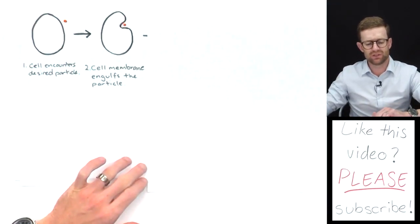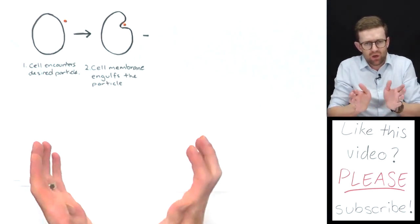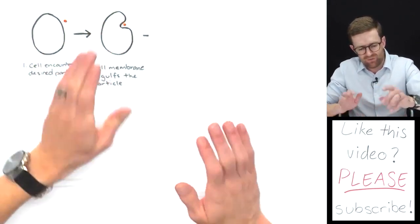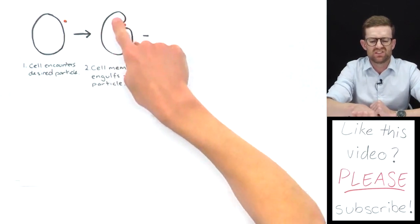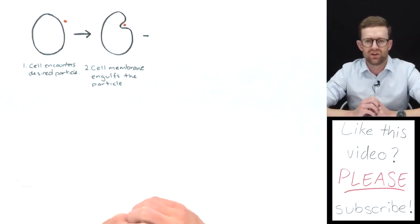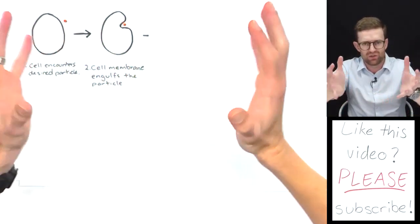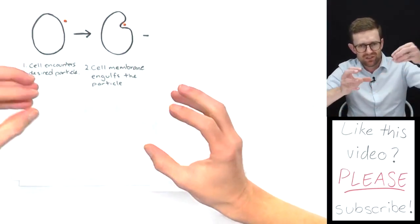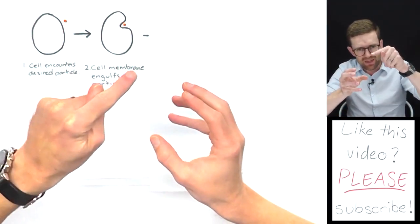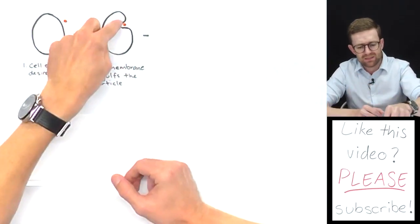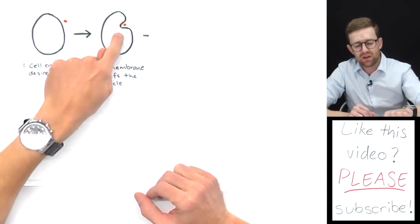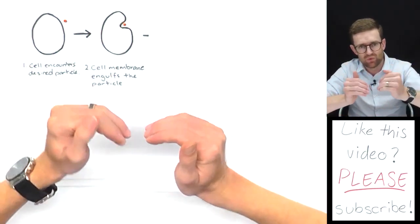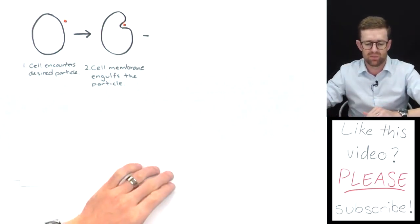So what happens first is the cell membrane engulfs and starts to wrap itself around that particle. Remember this is just a very simple 2D diagram, but the cell is actually a three-dimensional object. So you can imagine a little indentation forms around the outside of that particle, and it is like Pac-Man. It's kind of like the cell's starting to create this little mouth around the outside of the particle.